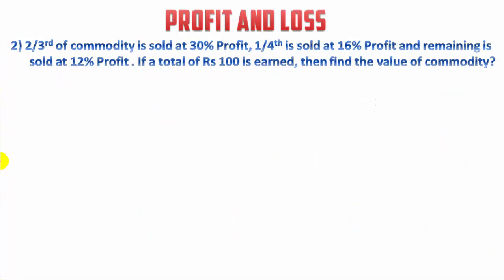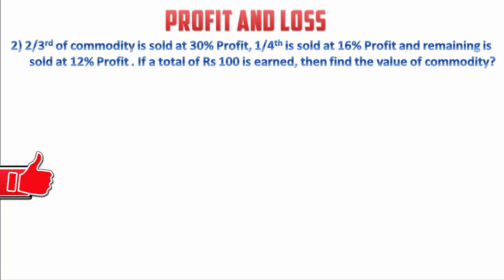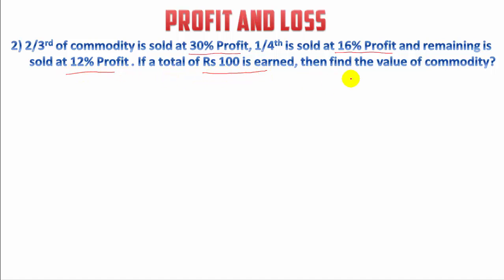Now before starting the second question, the second question is: 2/3 of a commodity is sold at 30% profit, 1/4 is sold at 16% profit, and the remaining is sold at 12% profit. If a total profit of Rs.100 is earned, find the cost price of the commodity.